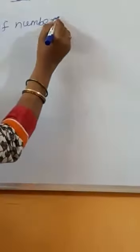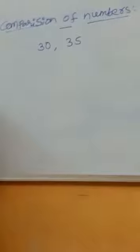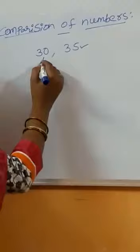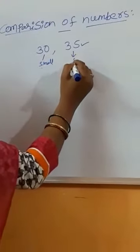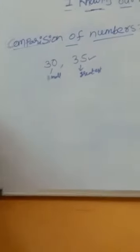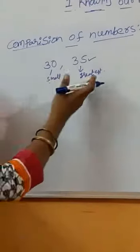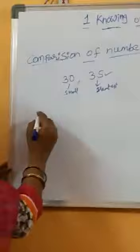How to compare numbers? Suppose if we take 30 and 35 — which one is the greatest number? We can easily say that 35 is the greatest number and 30 is the smallest number, because 30 is a small number. So we can easily identify the greatest and smallest numbers here.